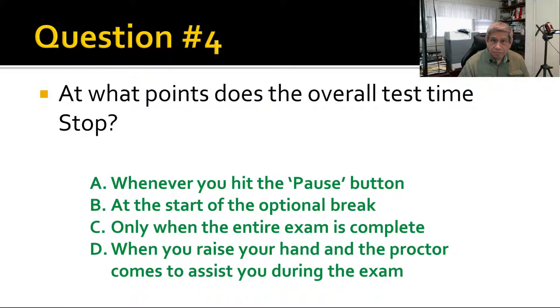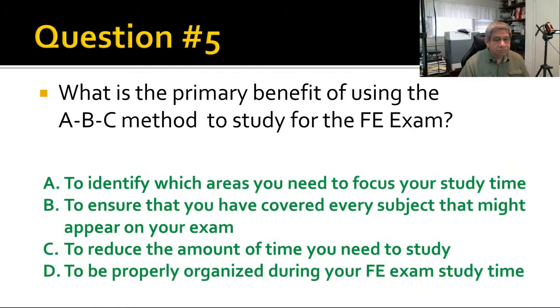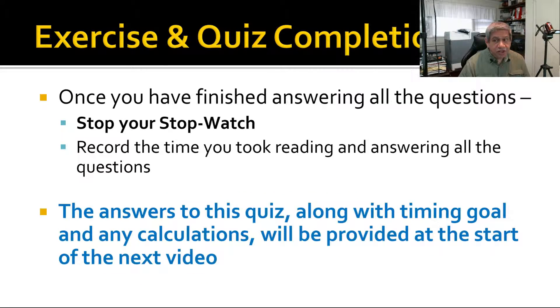Question number four: At what points does the overall test time stop? A: whenever you hit the pause button. B: at the start of the optional break. C: only when the entire exam is complete. Or D: when you raise your hand and the proctor comes to assist you during the test. Question number five: What is the primary benefit of using the ABC method to study for the FE exam? Choice A: to identify which areas you need to focus your study time on. B: to ensure that you have covered every subject that might appear on your exam. C: to reduce the amount of time you need to study. Or D: to be properly organized during your FE exam study time. Once you have finished answering all the questions, stop the stopwatch and record the time that you took. That includes the time it took to read the answers to this quiz, along with the timing goal and any calculations, which will be provided at the start of the next video.